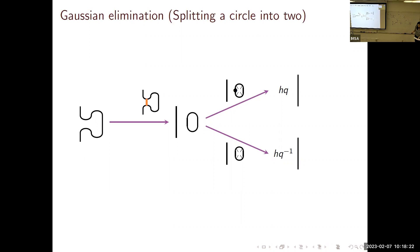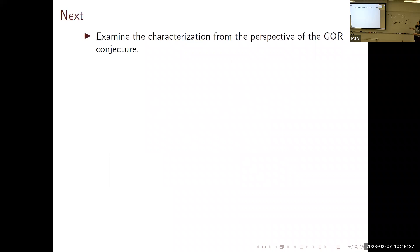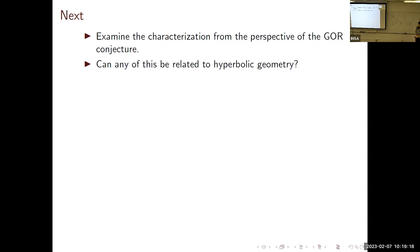I'll end with a discussion. Regarding the GOR conjecture: the difficult part is knowing the form of the differential and the type of generators needed for the differential graded algebra structure. Since we have explicit information about the differentials, it will be interesting to compare and see if we can find that structure.